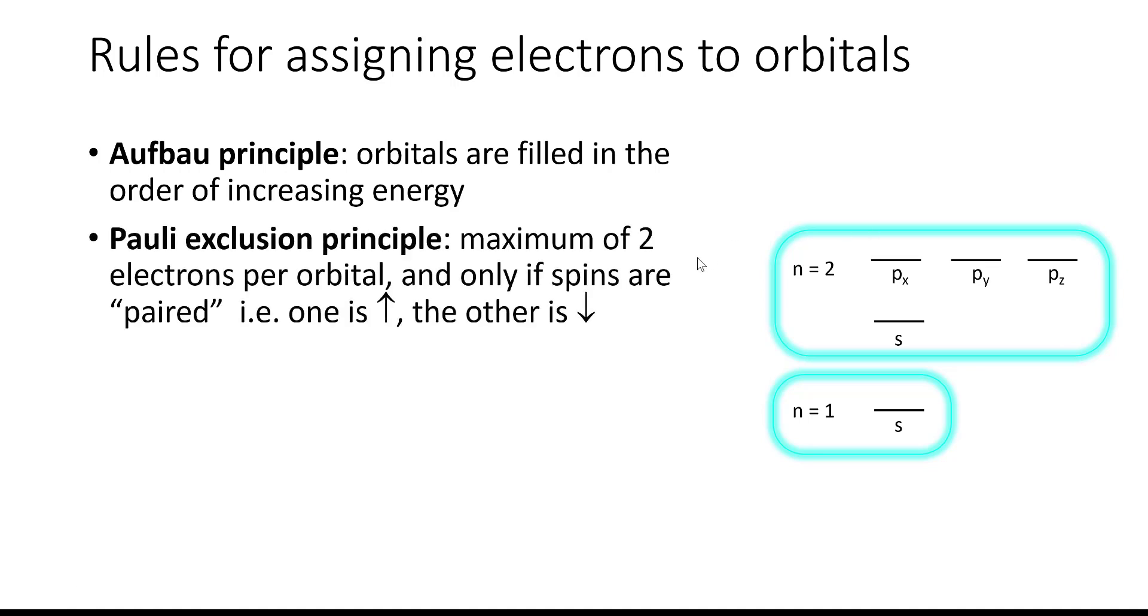The next is the Pauli exclusion principle, and it tells us that each orbital can only accommodate two electrons at most, and those electrons would have to be spin paired, meaning that one is spin up and the other one is spin down.